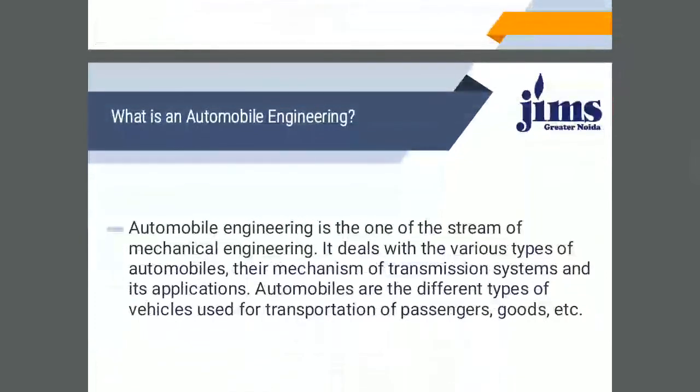What is Automobile Engineering? As you know, why it is called automobile? First of all, 'auto' means self, and 'mobile' means motion. So automobile is a self-propelled vehicle that travels on the roads — it means it is self-propelled. It is a branch of mechanical engineering, no doubt.